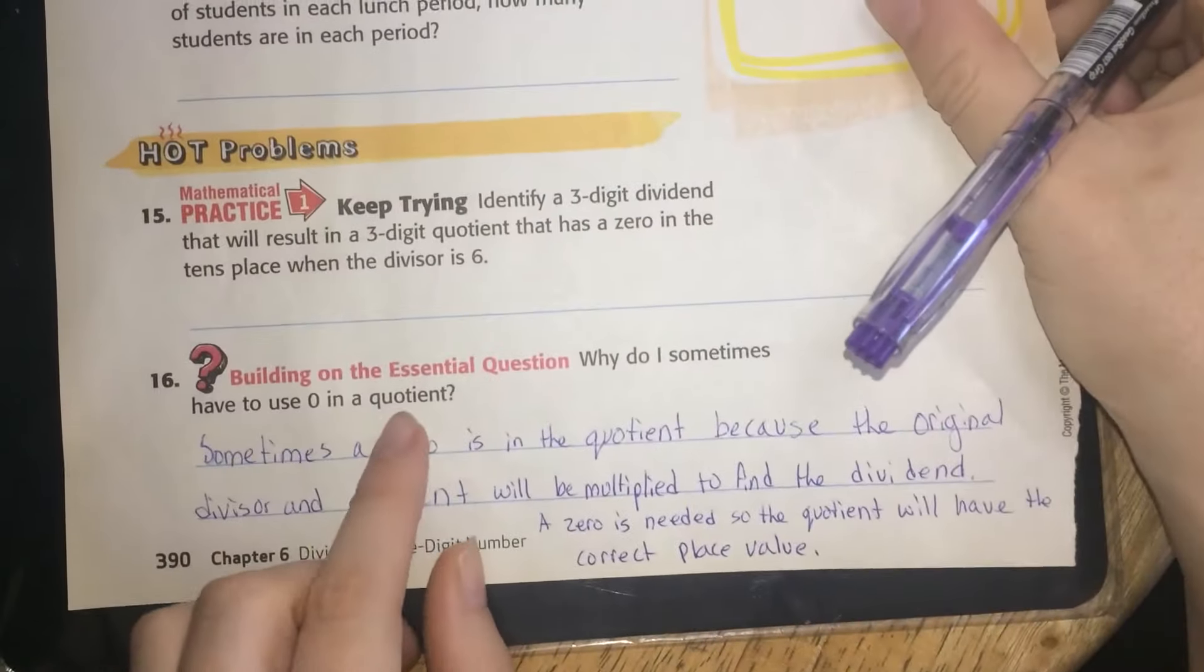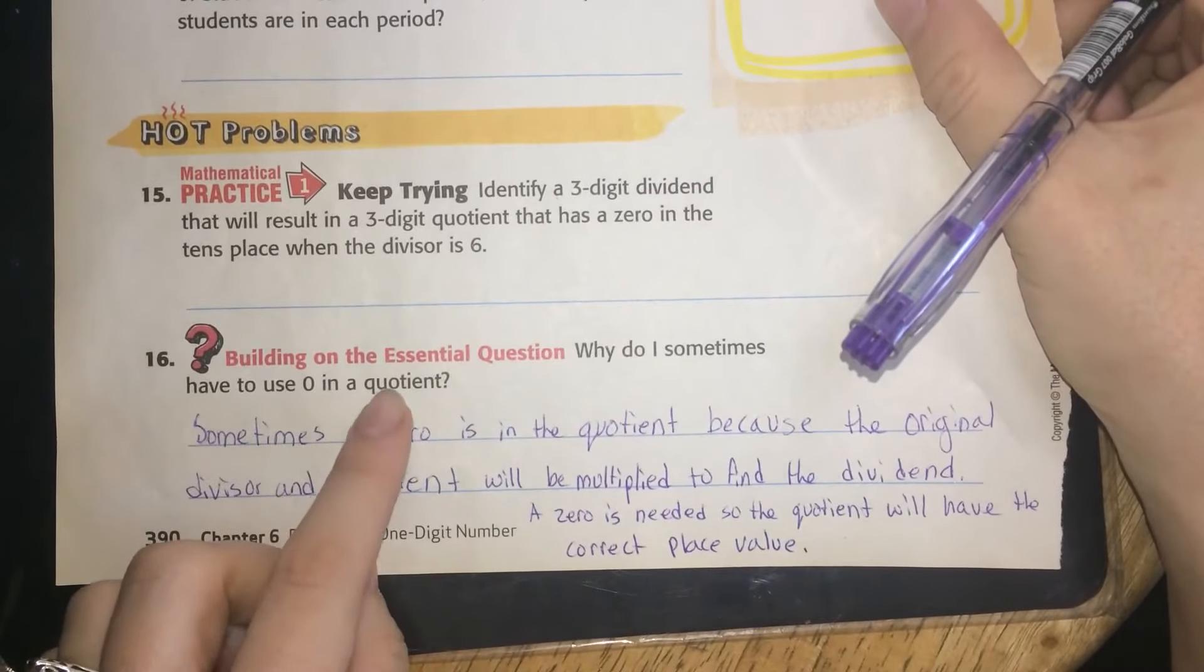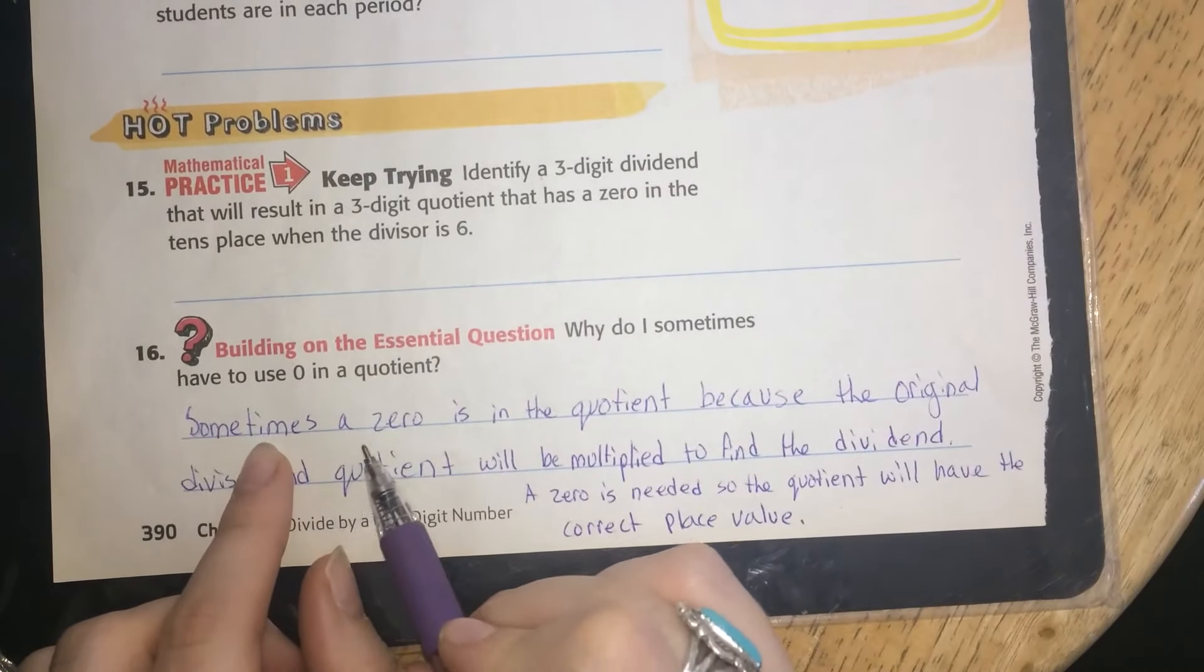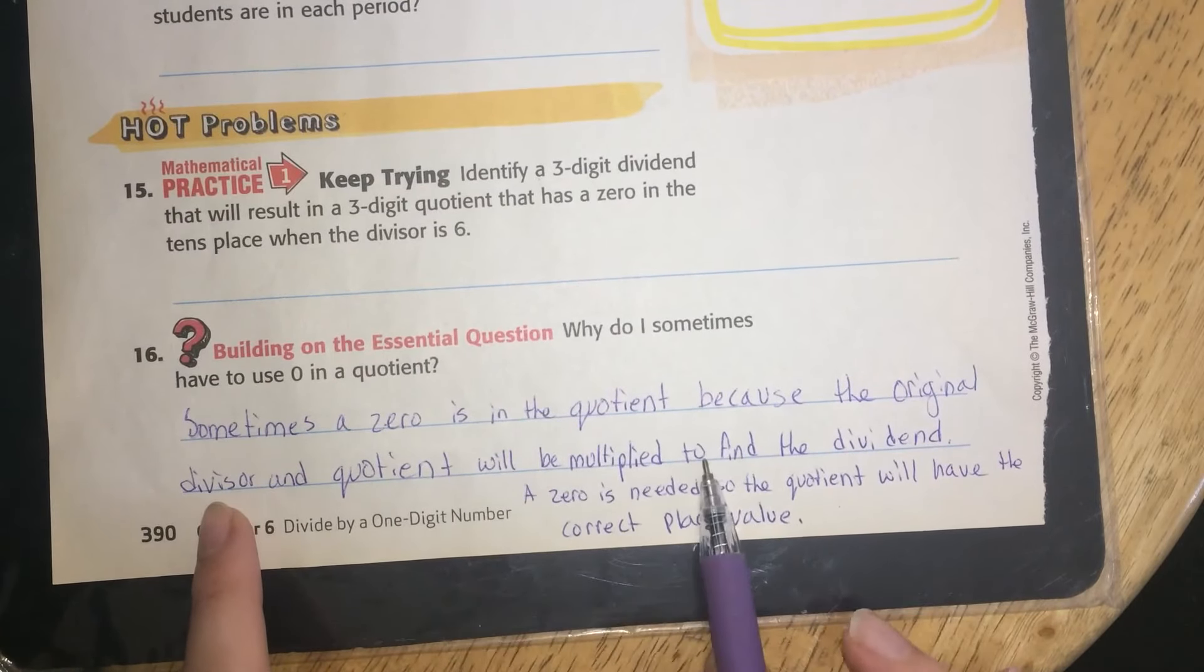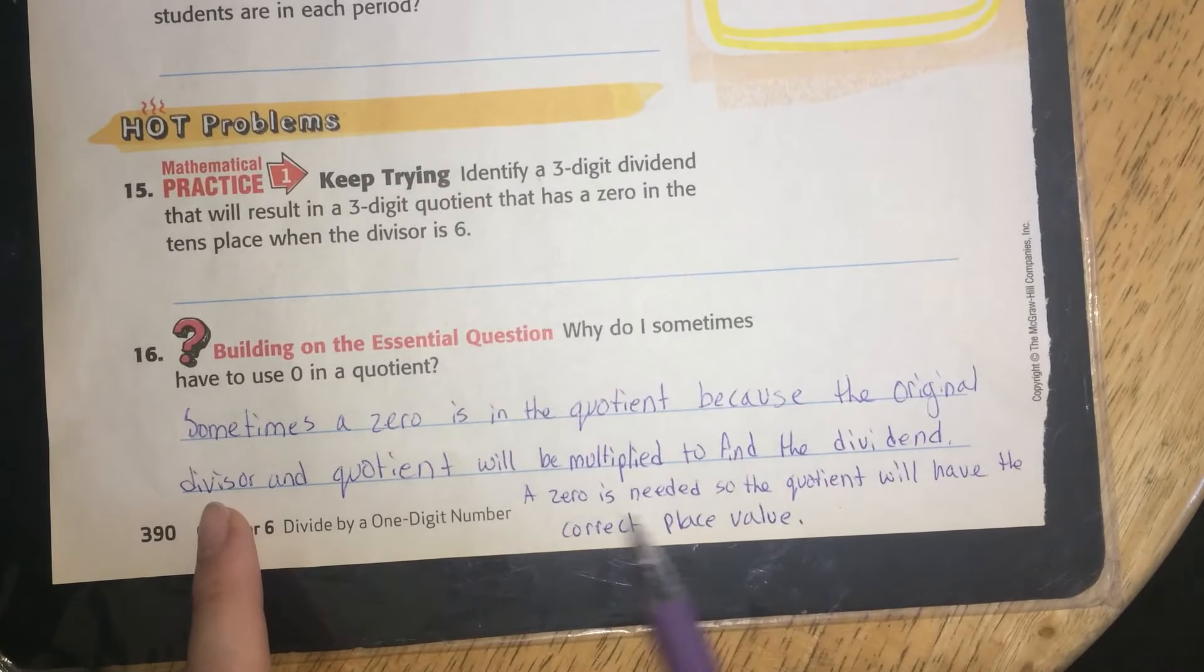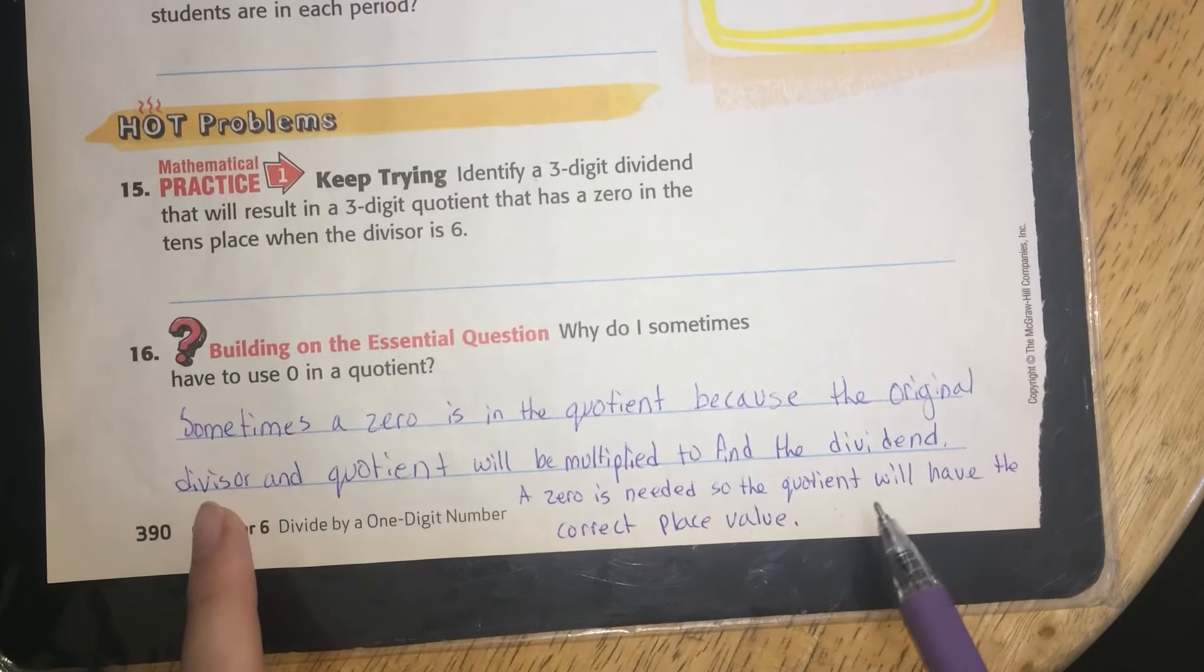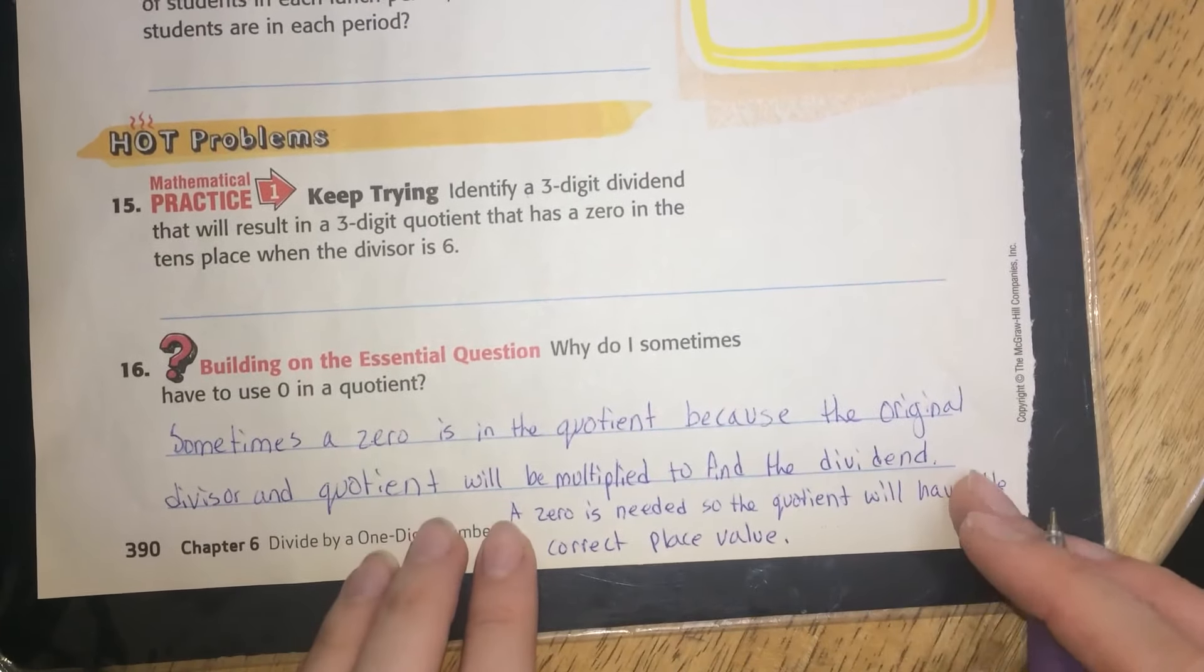Building on the essential question, why do I sometimes have to use 0 in the quotient? Sometimes a 0 is in the quotient because the original divisor and quotient will be multiplied to find the dividend. A 0 is needed so the quotient will have the correct place value.